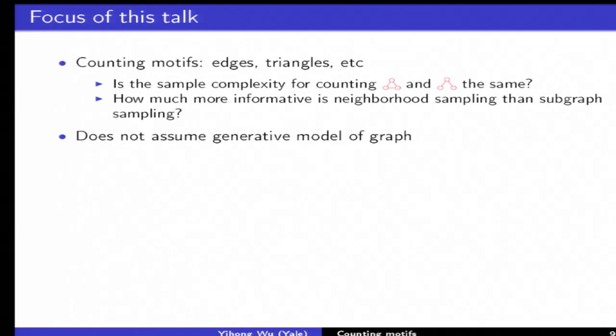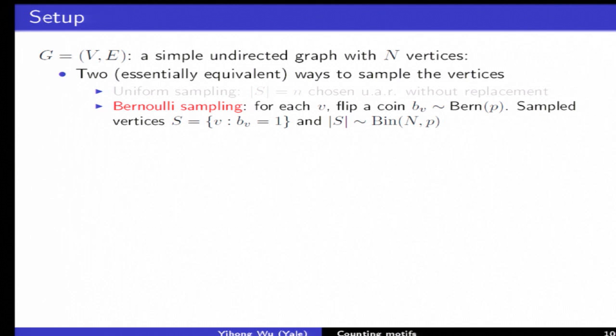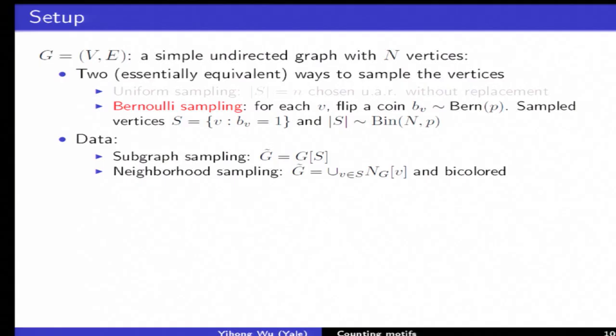I will not assume any generative models like stochastic block models. The graph will be worst case and the randomness is from the sampling mechanism. You have a simple undirected graph with capital N vertices. I'll focus on Bernoulli sampling. For each vertex you flip a coin with bias p, for all those heads those are the vertices you sampled, binomially distributed roughly p times n on average. You observe either induced subgraph or in neighborhood sampling model you observe union of stars with the center colored.